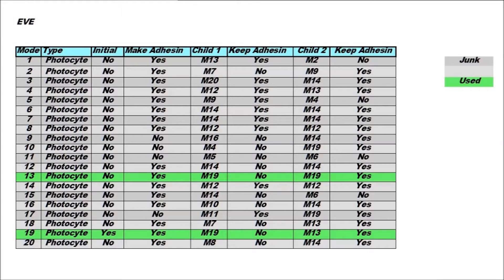This graph shows all 20 modes of her genome, what type of cell they are, which mode is the initial cell, whether they make a descent, which child cells they create, and whether those children keep a descent. You'll notice that I've also marked out in green the parts of her genome that Eve actually uses, and for the moment I'd like us to just look at the children of both these modes.